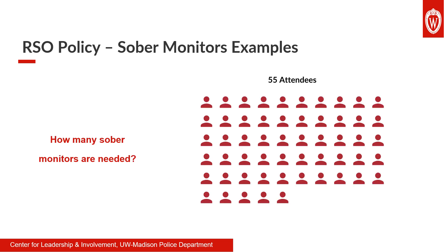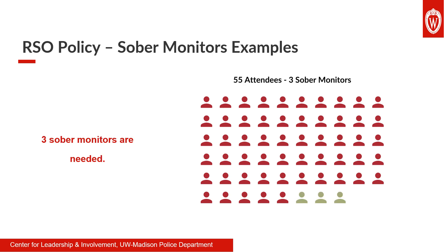At this event hosted by a single organization, we have 55 attendees. How many sober monitors have to be present? Go ahead and pause the video as you jot down your answer. The correct answer here is three sober monitors: two for the first 50, and a third for attendance up to 74. At least one of them needs to be over the age of 21.